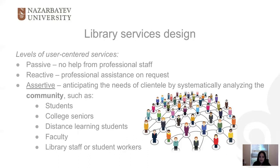Examples include students in a specific disciplinary area persistently producing poor papers, college seniors who are unfamiliar with reliable sources, distance learning students unable to take advantage of on-site information literacy sessions, faculty who are willing to broadly integrate information literacy skills into their courses, and library staff or student workers who are required to adopt new technology in order to deliver high quality information services at library service points.